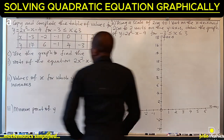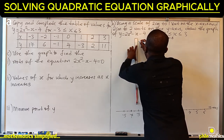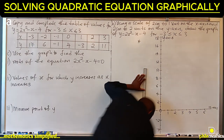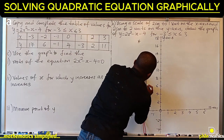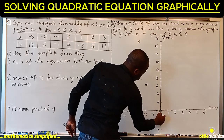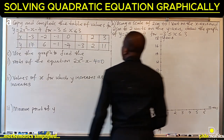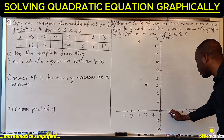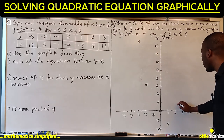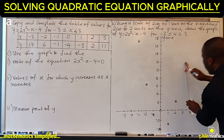Now plotting from the table: when x = -3, y = 17, so we trace and plot that point. When x = -2, y = 6 — plot here. When x = -1, y = -1 — plot here. At x = 1, y = -3 — plot here. At x = 2, y = 2 — plot here. And at x = 3, y = 11 — plot here.